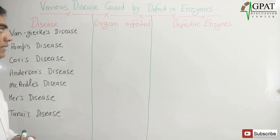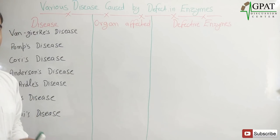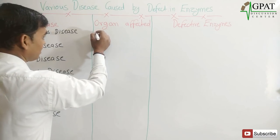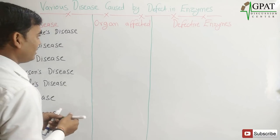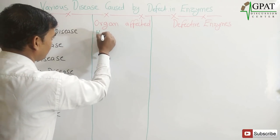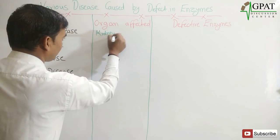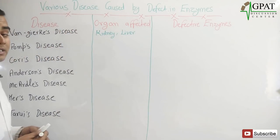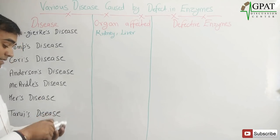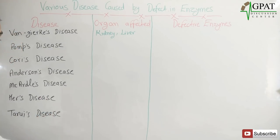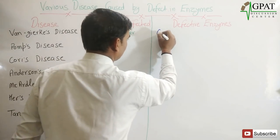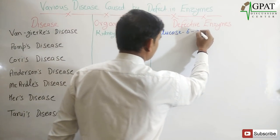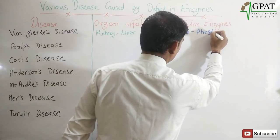First, Gierke disease. Gierke disease mainly affects the kidney and liver. The enzyme responsible for this disease development is glucose-6-phosphatase.